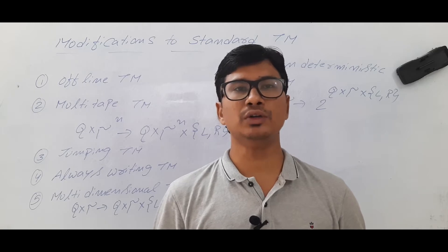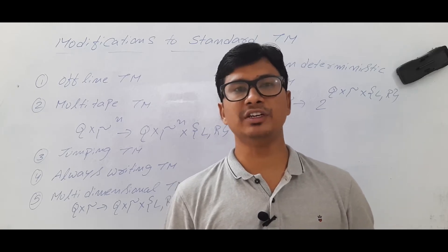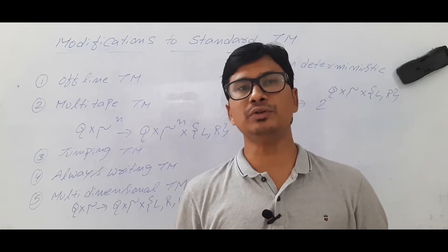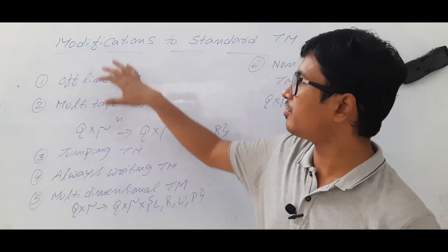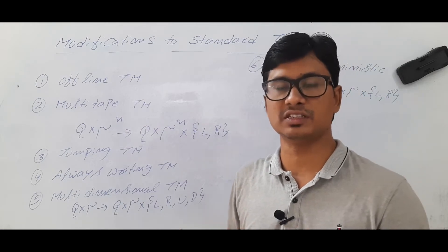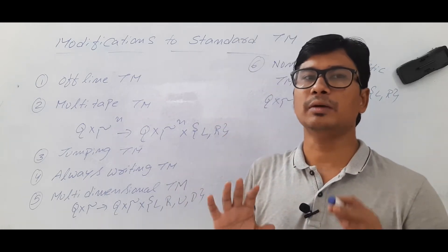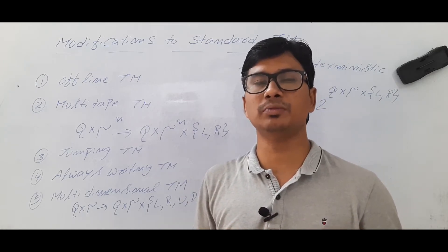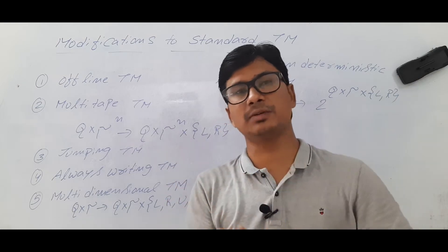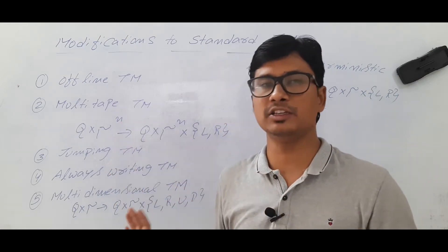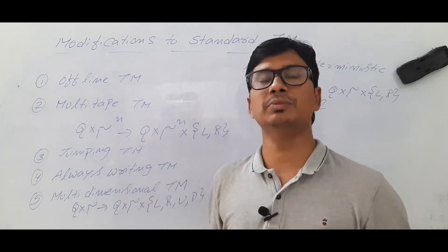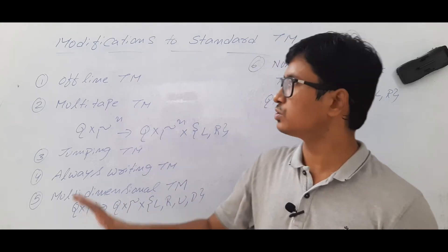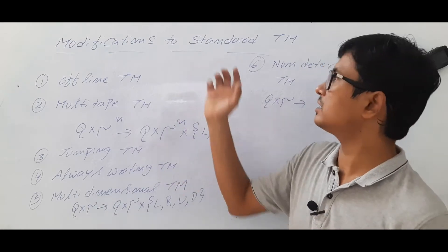In this video, I want to discuss some of the modifications suggested to the Turing machine. Even after these suggestions, if you modify them and apply them to the standard Turing machine, the power of the Turing machine is not changed. Any language which was previously accepted, even now after adding these modifications, the Turing machine can still do it. So there is no change in the Turing machine's power — that's why these suggestions have not been adopted as standard.